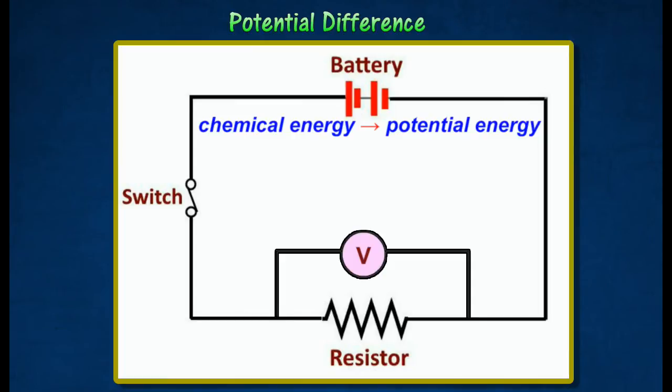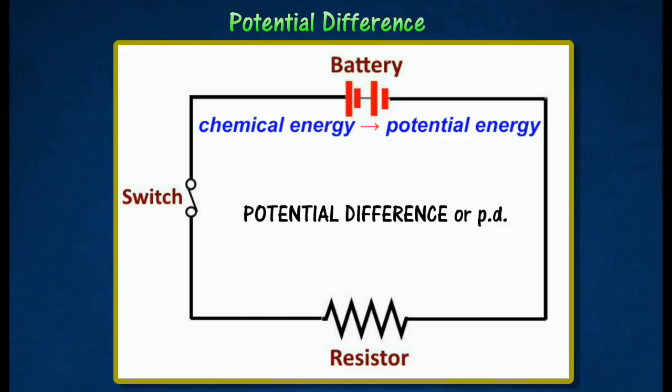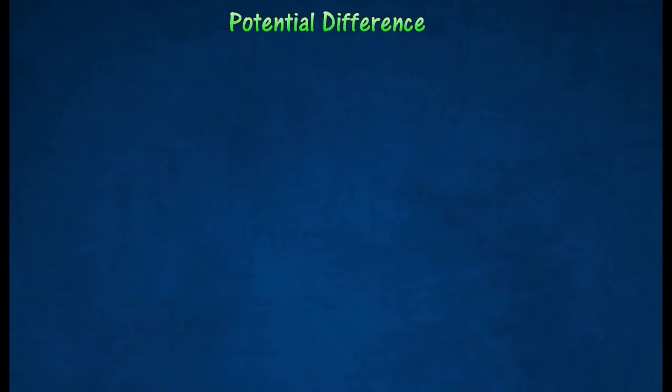The electrons entering the resistor have a higher electrical energy than the electrons leaving the resistor. This difference in electrical potential energy across the lamp is called a potential difference or PD.